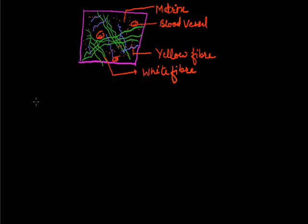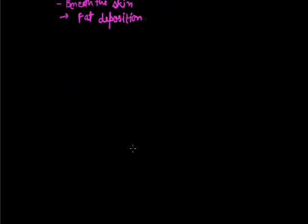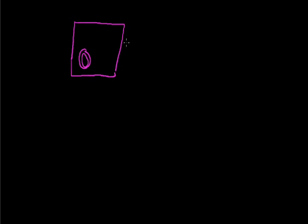The second kind of Connective Tissue Proper is called Adipose Tissue. This is a tissue responsible for fat deposition. It is formed beneath the skin, and large cells called adipocyte cells are present which are filled with fat, causing them to behave like fat globules.